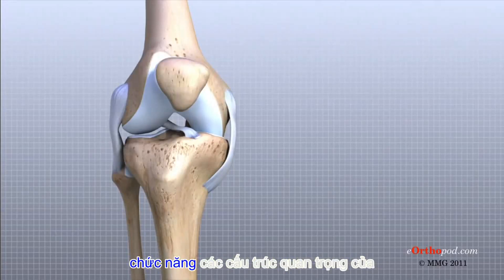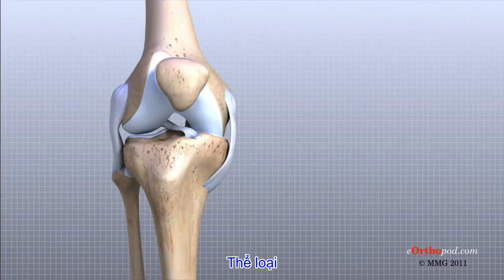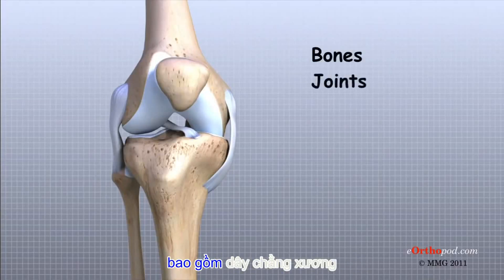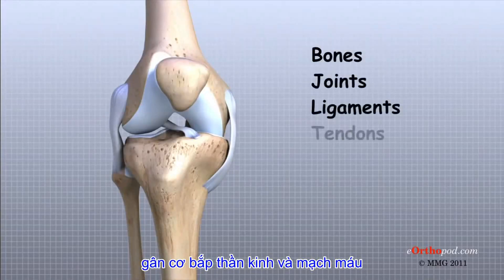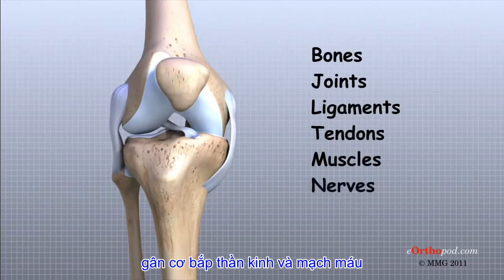The important structures of the knee can be divided into several categories. These include bones, joints, ligaments, tendons, muscles, nerves, and blood vessels.